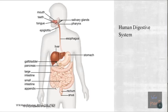We have our salivary glands and the pharynx, which is common to both the respiratory system and the digestive system. Then we have the esophagus. The food passes through the stomach where a lot of digestion takes place - especially mechanical digestion and a little chemical digestion. Then it goes to the small intestine. Can you see the C-shaped portion passing from the stomach to the small intestine, just below the liver and pancreas?